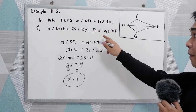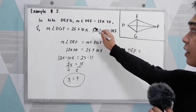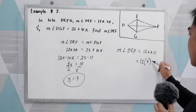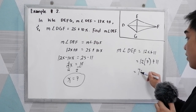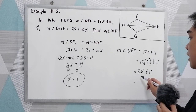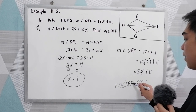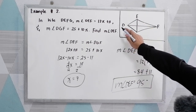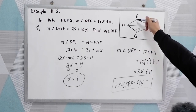Now find the measure of angle DEF: 12 times 7 plus 11 equals 84 plus 11, which is 95 degrees. Since angle DEF is congruent to angle DGF, angle DGF also measures 95 degrees.